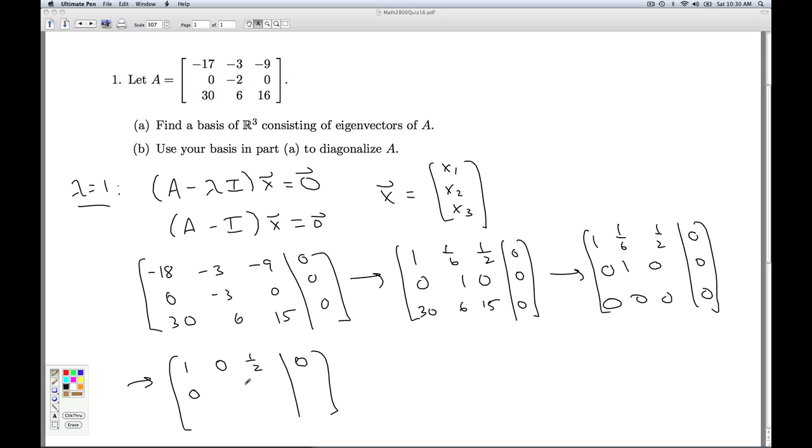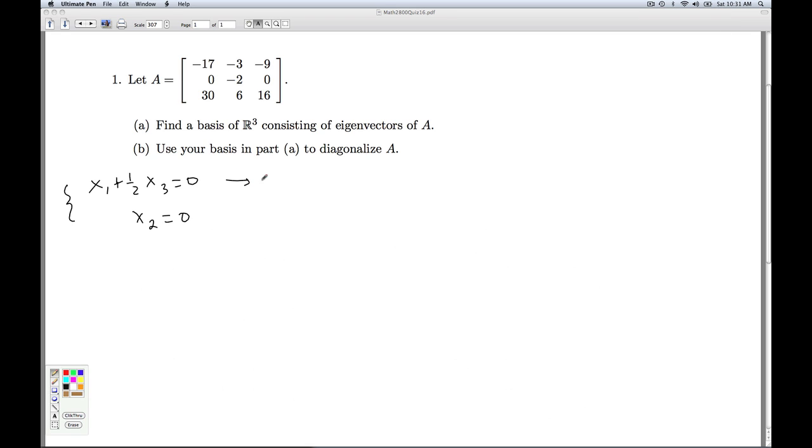And I get my reduced row echelon form. Bring that out of the matrix. I got X1 plus 1/2 X3 is 0. I have X2 equals 0 and 0 equals 0. So once again, I get one free variable. X3 is free. So from X1 plus 1/2 X3 is 0, I get X1 is negative 1/2 X3, and X2 is 0.